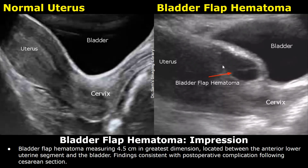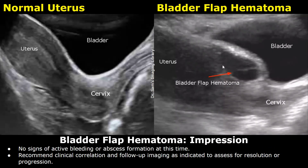Impression: bladder flap hematoma measuring 4.5 cm in greatest dimension, located between the anterior lower uterine segment and the bladder. Findings consistent with postoperative complication following cesarean section. No signs of active bleeding or abscess formation at this time. Recommend clinical correlation and follow-up imaging as indicated to assess for resolution or progression.